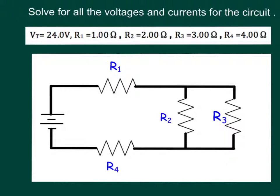Okay, we've got ourselves a combo circuit. We've got a couple of resistors that are in series with two resistors in parallel. What we need to do is solve for the voltages and currents in the entire circuit.